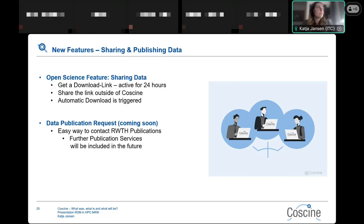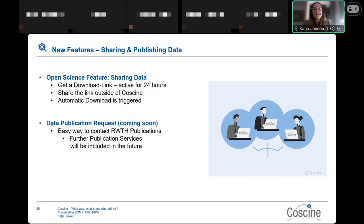Now for an outlook on features we've implemented or are planning. A new download link sharing function has been implemented: inside your project resource, you can click on the three dots next to a file and generate a download link active for 24 hours. You can share this link outside CoSign, and when someone opens it, the download is automatically triggered. This is useful if you don't want to add someone to your project and just want to share a single file.